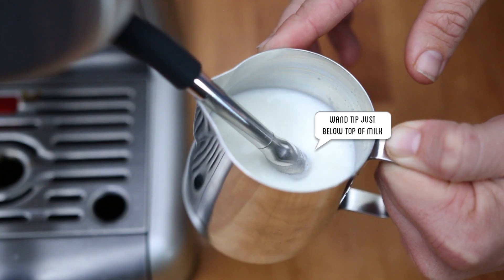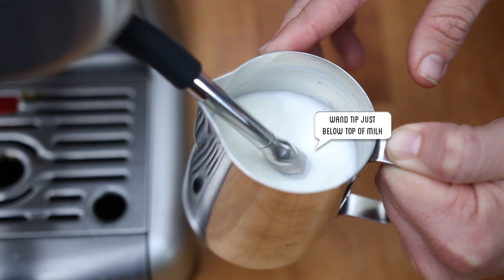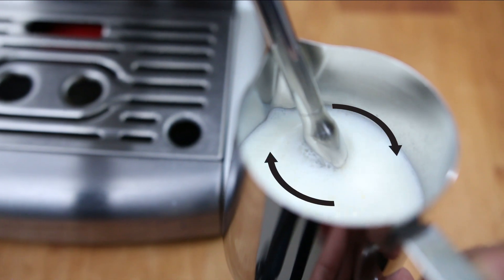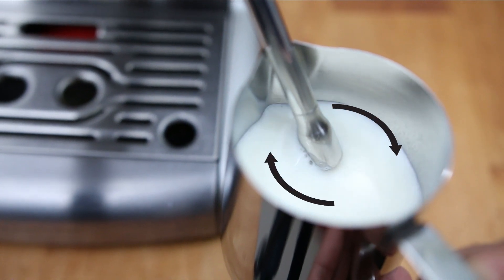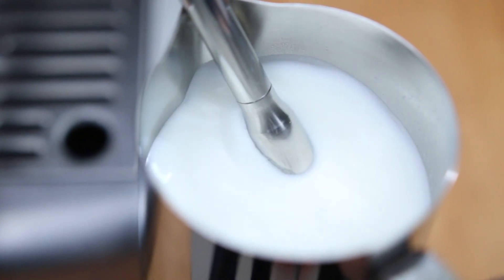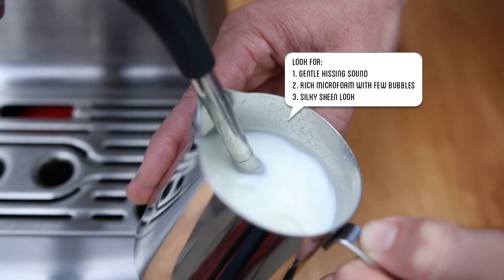Insert the steam wand to just below the surface on an angle. Turn the dial to steam. We want to get the milk swirling around the jug with a gentle hiss, not a screaming or gurgling sound. And gently adjust the milk height so you have that consistent gentle hiss.